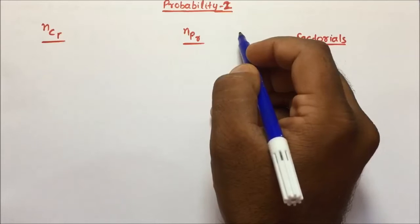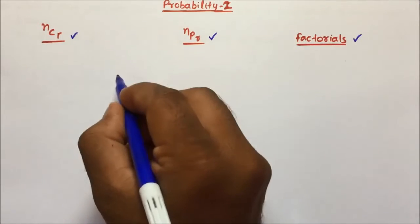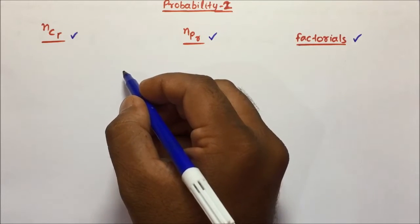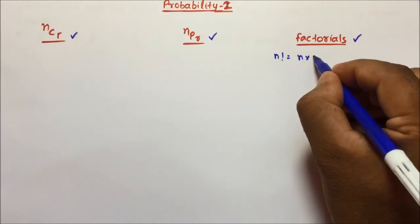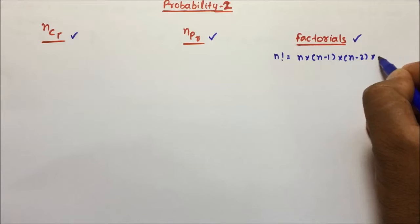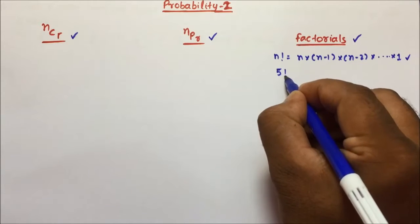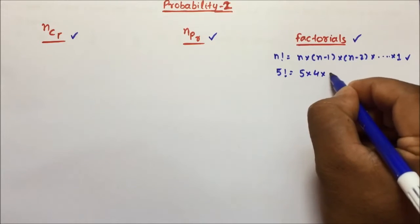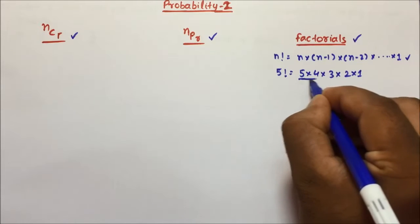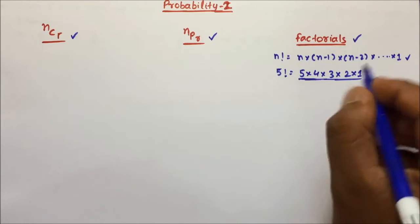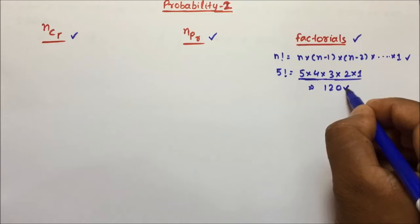Before proceeding with probability questions, I am going to tell you what is factorials, what is permutation, and what is combination, because these will be used in probability. So n factorial will be equal to n into n minus 1 into n minus 2, and then you go till the minimum number, which is 1. Suppose if I ask you to calculate factorial of 5, then it will be 5 into 4 into 3 into 2 into 1. So 5 into 4 is 20, 20 into 3 is 60, and 60 into 2 is 120. So 5 factorial equals 120.